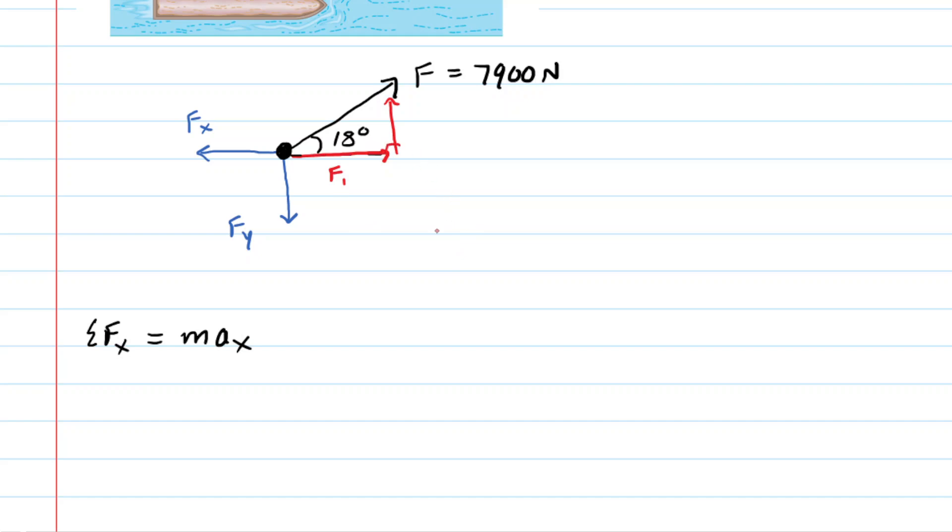We're going to just call this X component F1. Using a little bit of trigonometry, you can see from this right triangle that the cosine of the 18-degree angle would equal the side adjacent, which is F1, divided by the hypotenuse, which is F, and that was 7,900 newtons. So if you multiply both sides of that equation by 7,900, you would see that the X component is 7,900 newtons times the cosine of 18 degrees. So that's going to be our first force acting in the X direction. Let's go ahead and write that in.